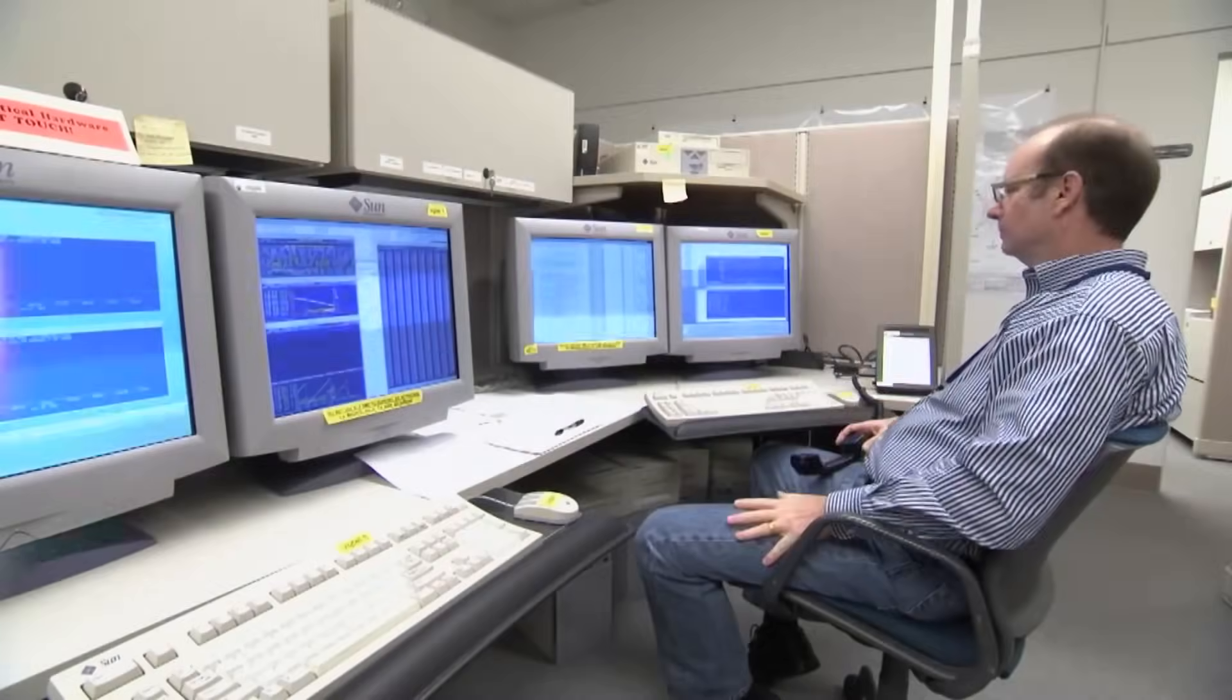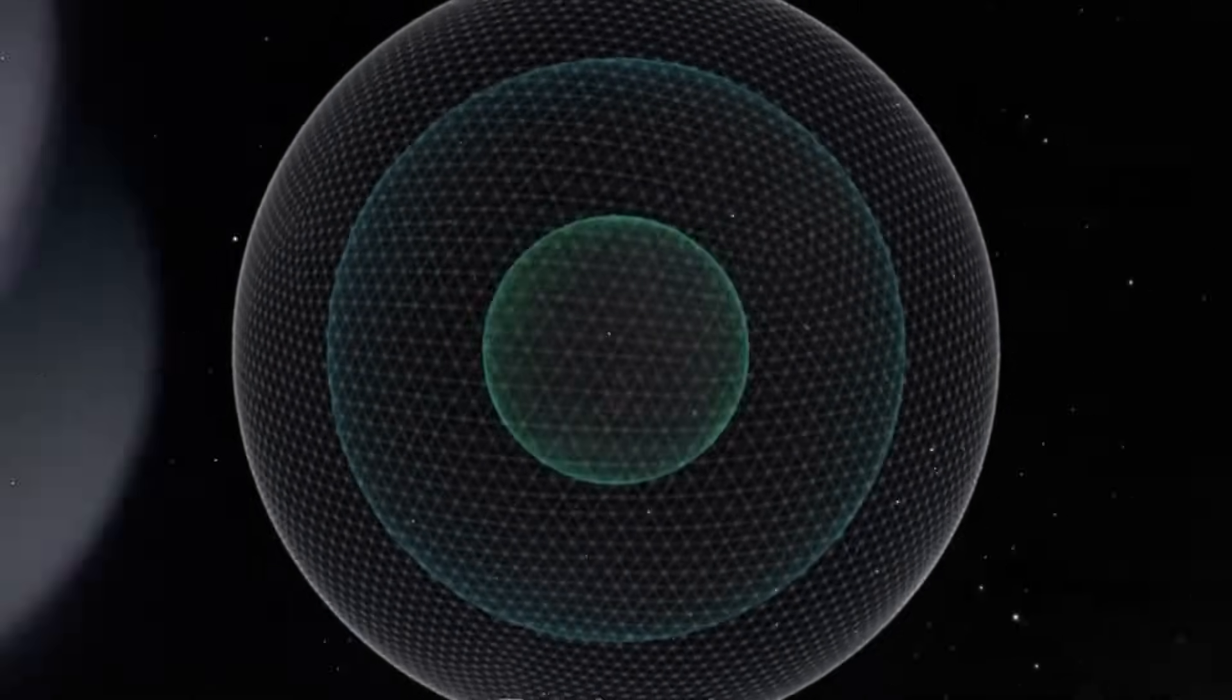Engineers worked tirelessly to solve the mystery. Eventually, they succeeded. They redirected the AACS to send its data through the correct computer, and the garbled transmission stopped. But the deeper question remains unanswered. Why did it happen in the first place?